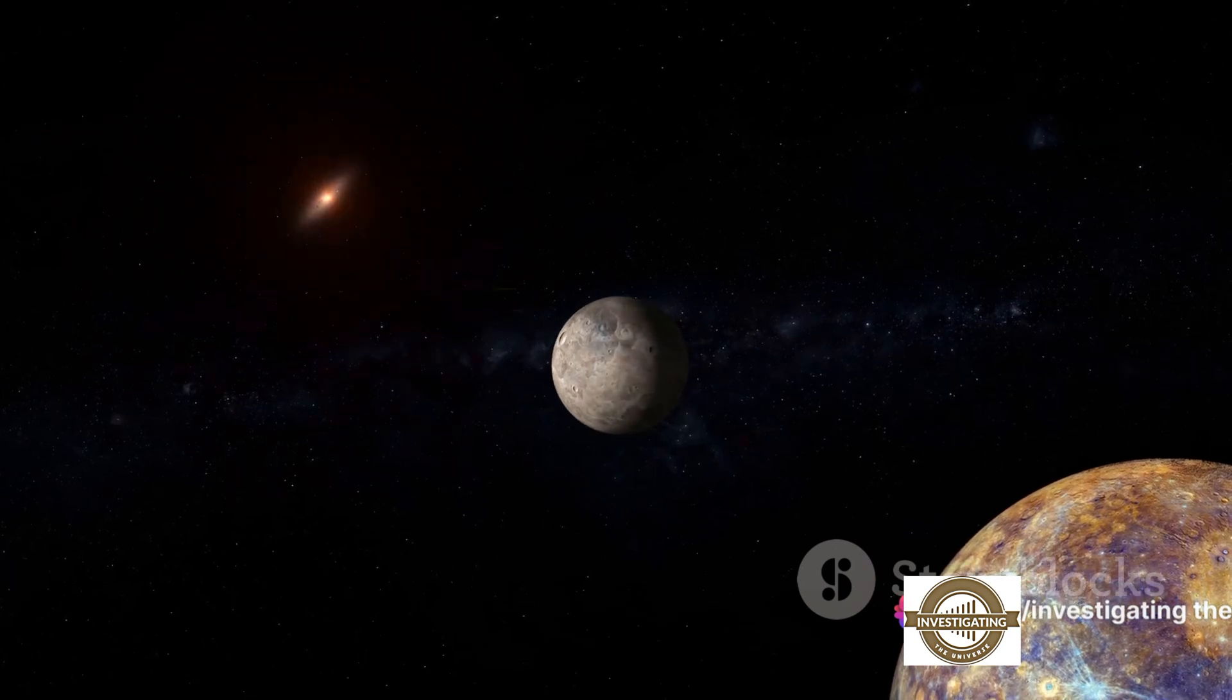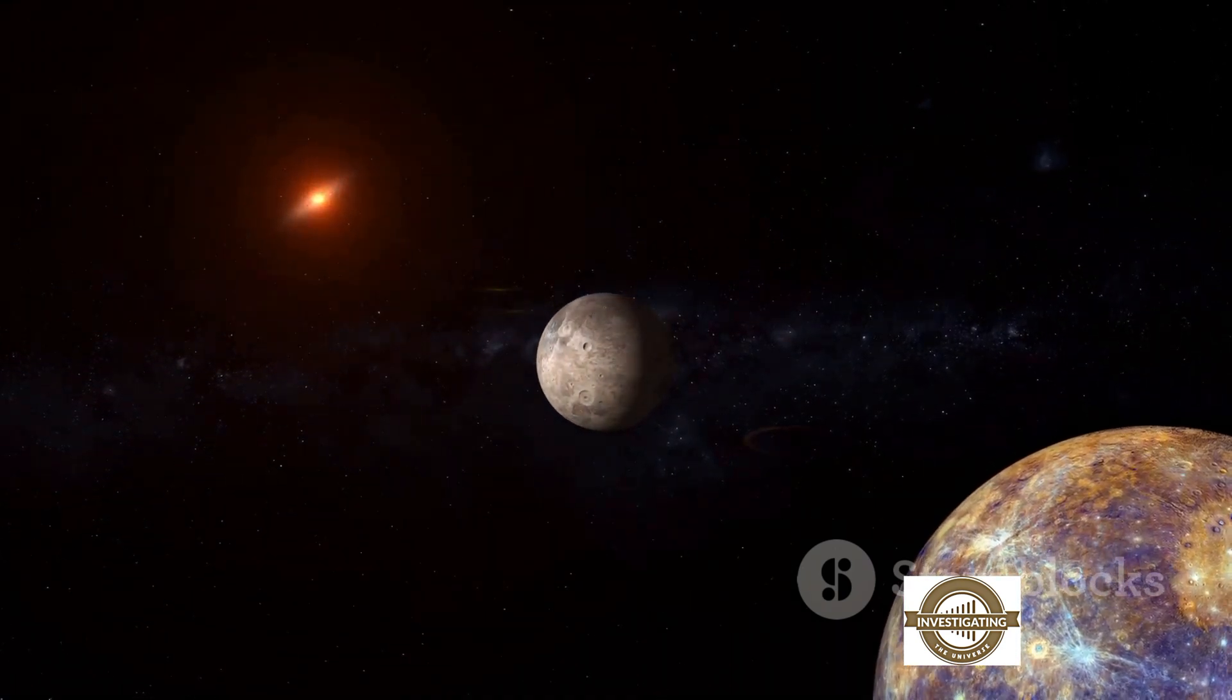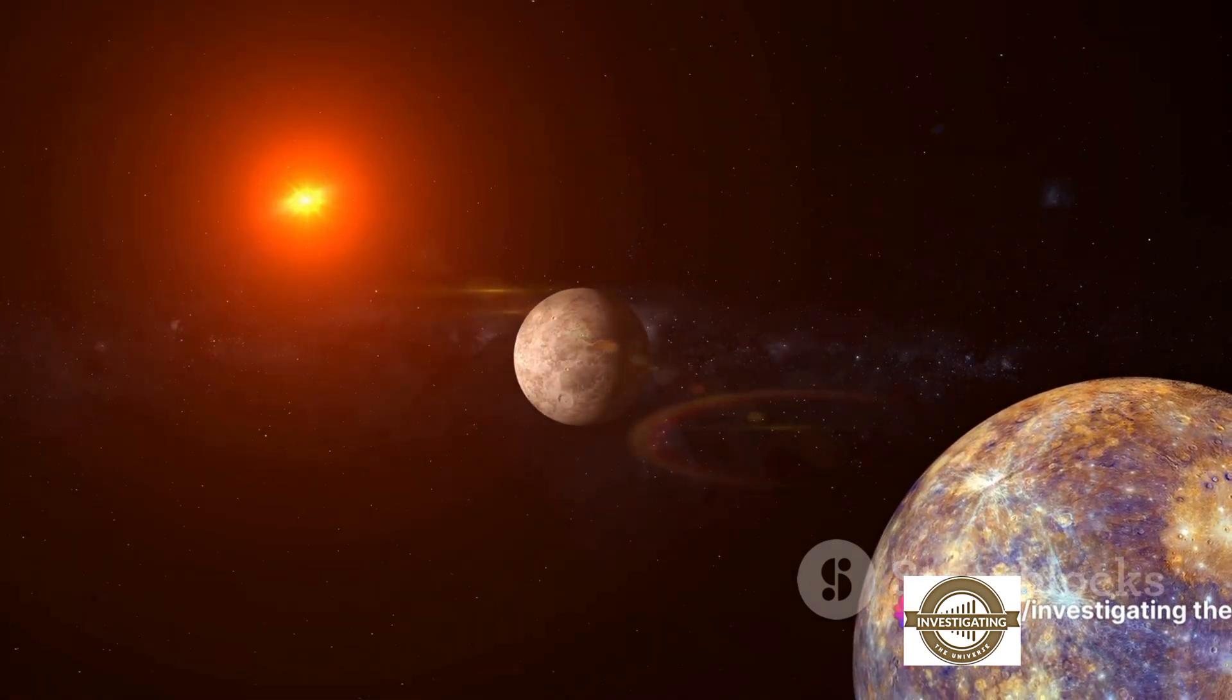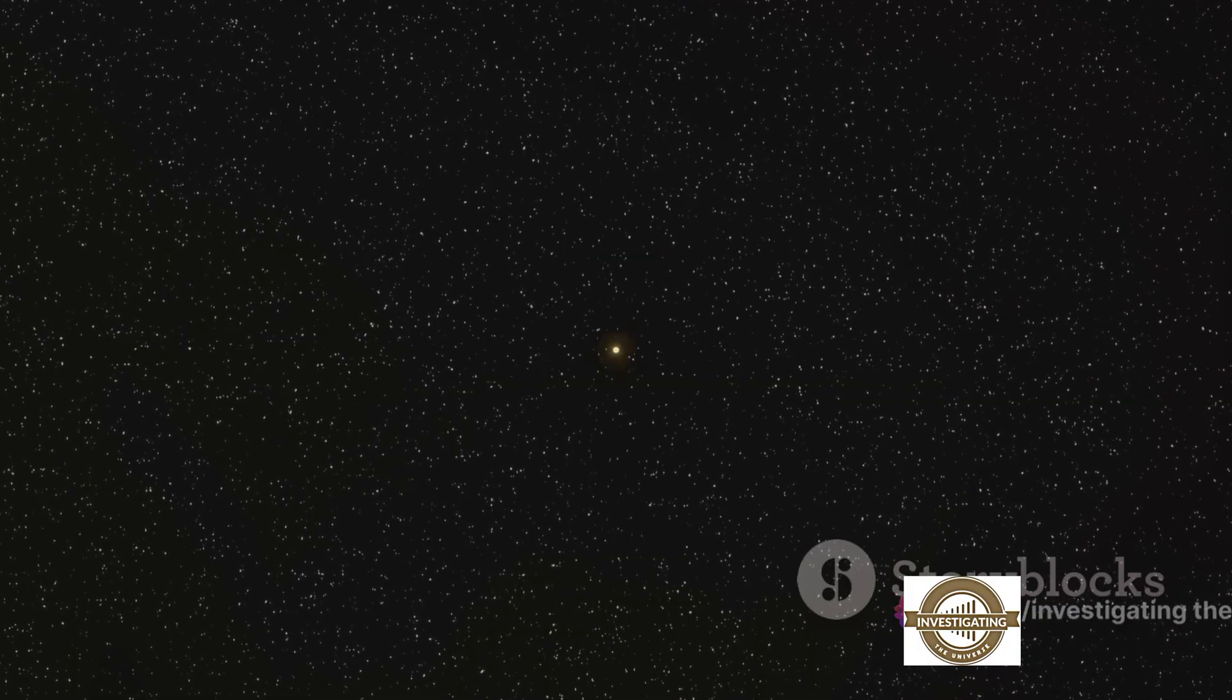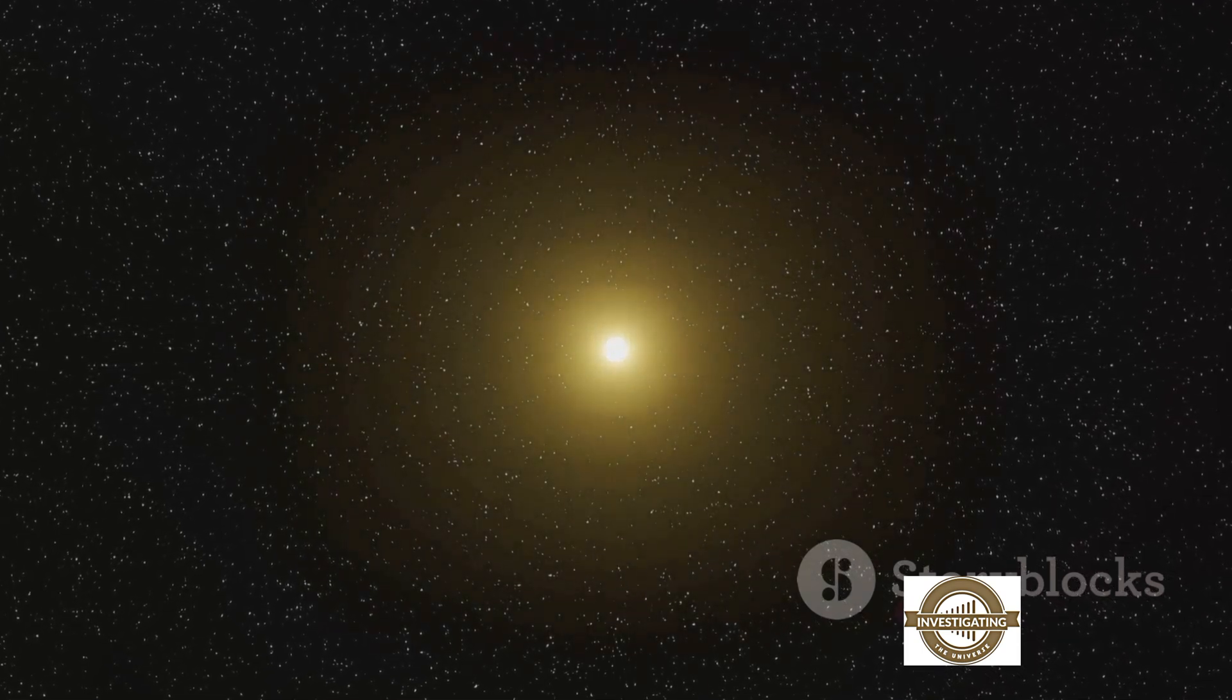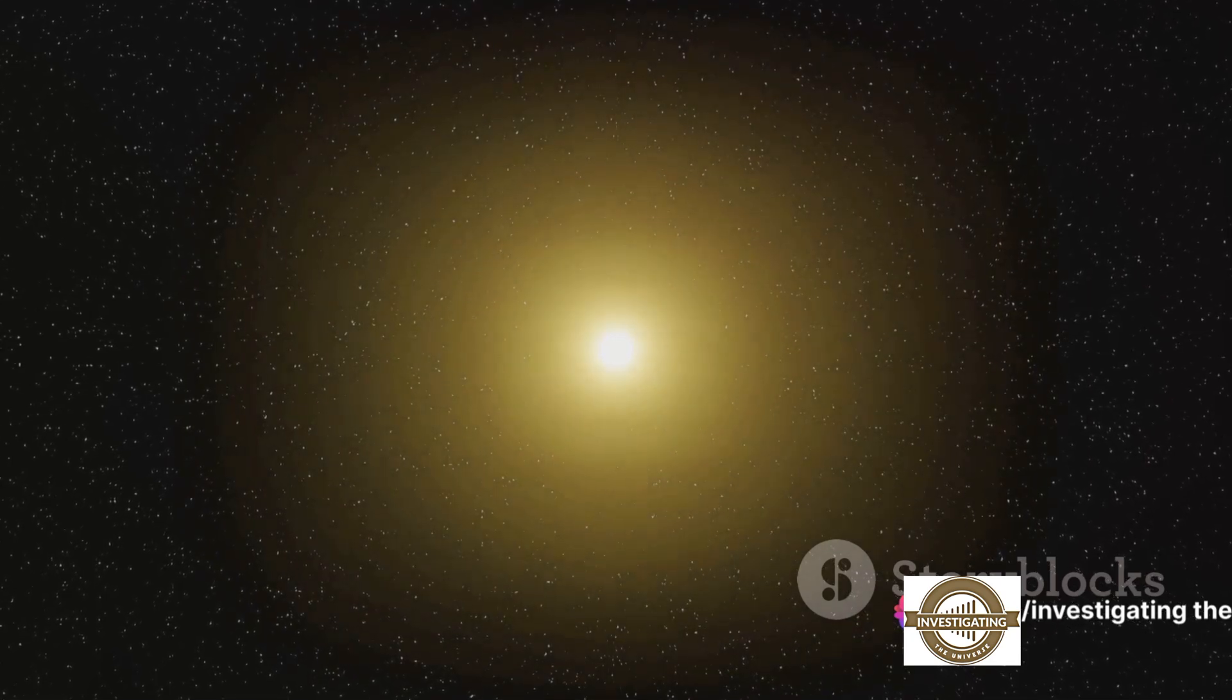The unique aspect about the imminent Betelgeuse supernova is its proximity to Earth. Most supernovae observed by astronomers are billions of light years away. But Betelgeuse, at a relatively meager 700 light years, will be close enough to provide an unprecedented view of a supernova in action. While it won't pose any danger to Earth, it will definitely light up our night sky, becoming a temporary but very bright addition to our celestial landscape.